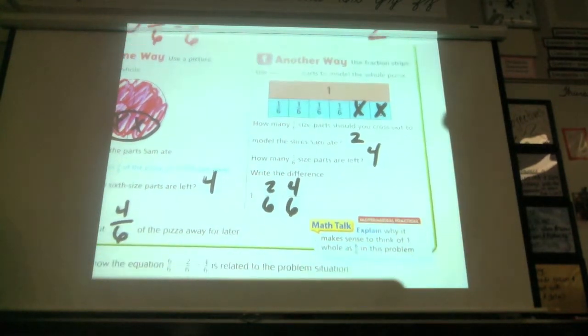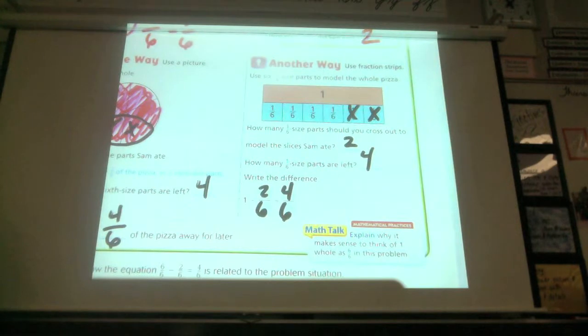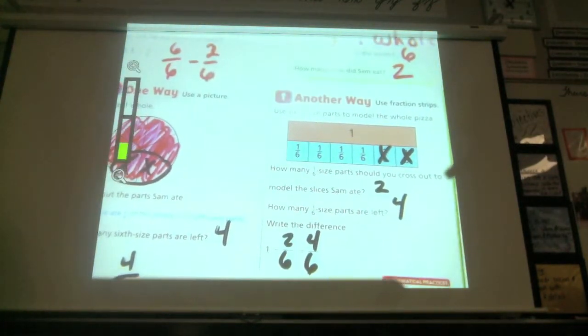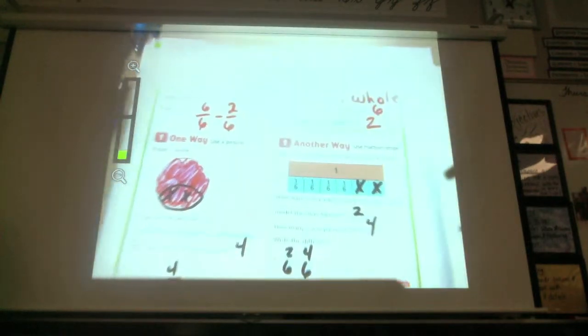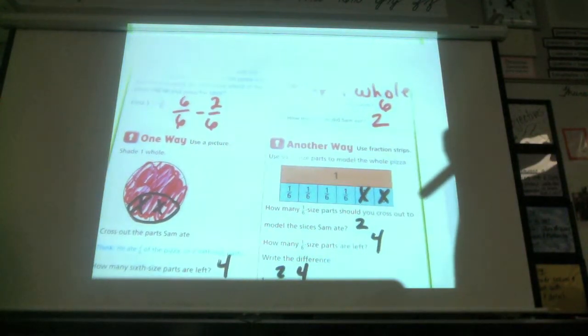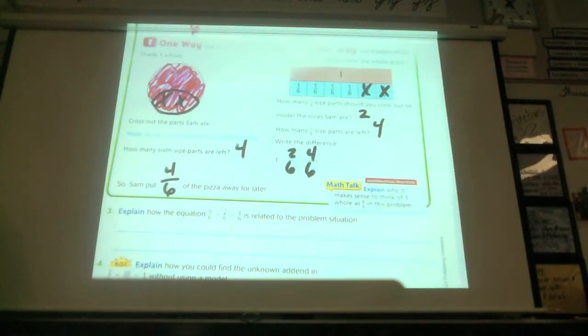And the math talk, it says, explain why it makes sense to think of one whole as six-sixths. We've already talked about that because Owen had explained why that makes sense. Use one that has the denominator that you want to, that's friendly to work with. Explain how the equation six-sixths minus two-sixths equals four-sixths is related to the problem situation. So explain, here was our problem in the situation. One minus two-sixths. Explain how the equation six-sixths minus two-sixths equals four-sixths is related to the problem. How does that help us solve the problem? Go ahead and do that in your own words.